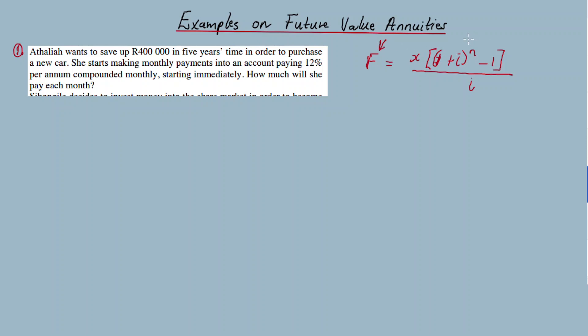In this example, we'll calculate n and X. Number one: Atalia wants to save up R400,000 in five years' time, that's F, in order to purchase a new car. She starts making monthly payments into an account paying 12 percent, compounded monthly, starting immediately. How much will she pay each month?